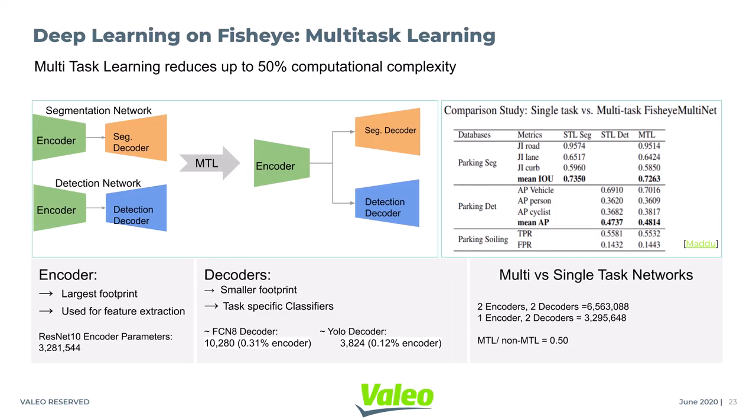Recently, multi-task learning has become a common paradigm in autonomous driving, due to efficient hardware utilization, reduced parameterization, and generalization with limited data. A network with a shared encoder for two tasks is shown. As the encoder is the computationally heavy unit, sharing it can save up to 50% of the computational complexity, while keeping similar performance levels by making use of inductive bias.